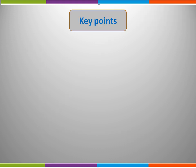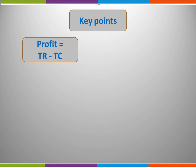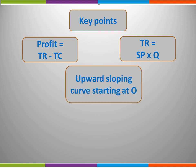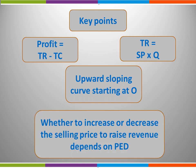So what were the key points in this video? Profit equals total revenue minus total cost. Total revenue equals selling price times quantity. Total revenue is shown as an upward sloping curve starting at zero. One additional point: whether to increase or decrease the selling price in order to raise revenue depends upon the price elasticity of demand.